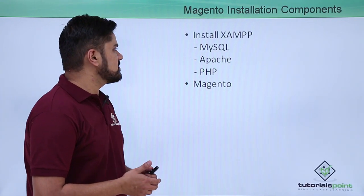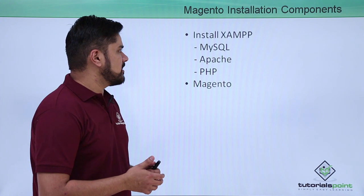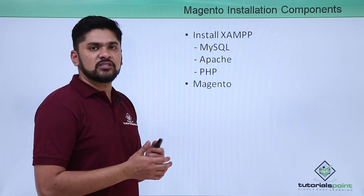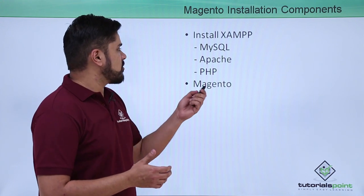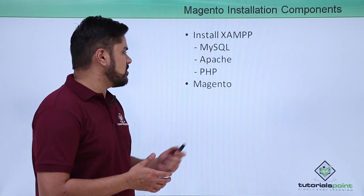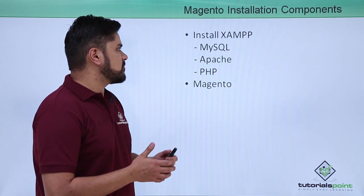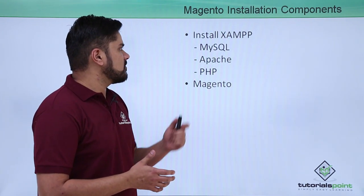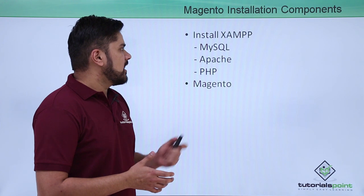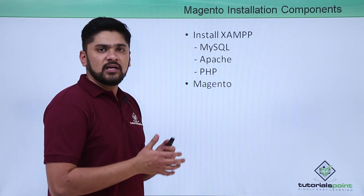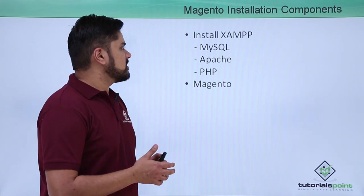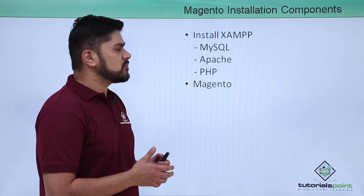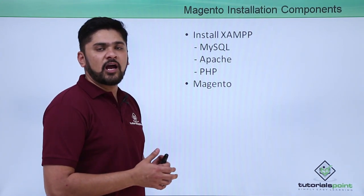First, you need XAMPP. XAMPP is basically a web server solution package through which you can easily work upon the installation of Magento. It will provide you a database as well as a server, and it is written in PHP. XAMPP is known for being cross-platform: X is for cross-platform, A is for Apache, M is for MySQL which is now known as MariaDB, P is for PHP, and the last P is for Perl. It is a web server solution package provided by Apache Friends.